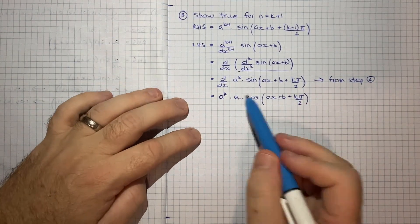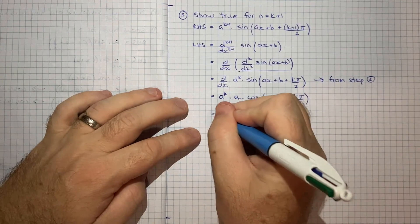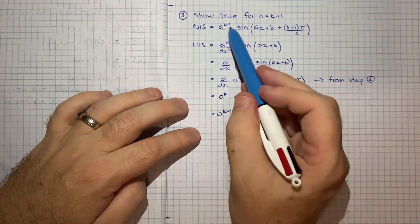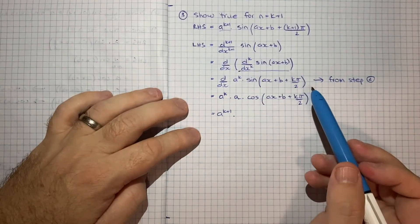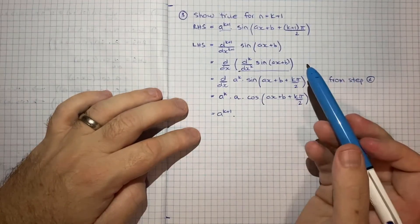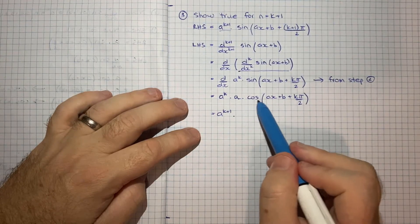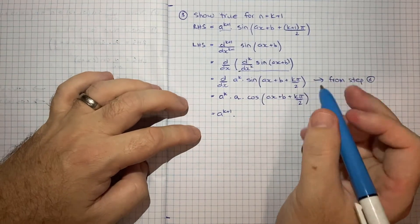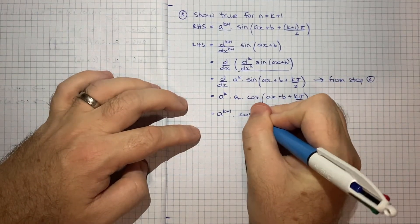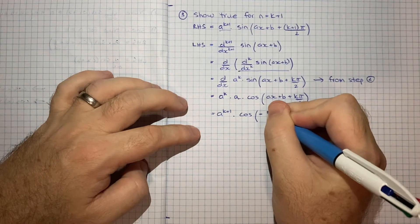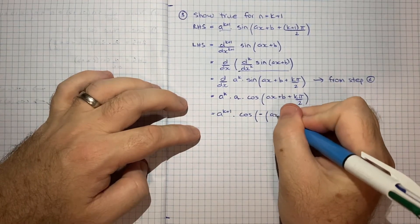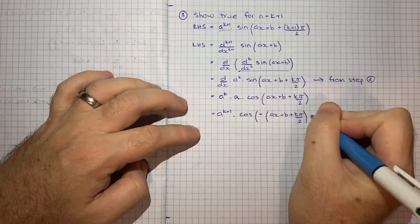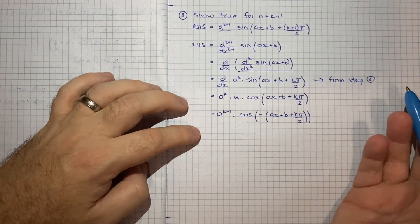And in terms of differentiating this we use the same technique we did before. The derivative of the inside with respect to x will just be a. So it's going to be times a and then we write cosine and then we leave what's inside. Now because we've got a^k times a that can become a^(k+1). Which is good because we do have an a^(k+1) in our right hand side. And just like we did for step 1 we need to convert this cosine into a sine. And I think we can use the same technique as before. So the first thing we'll do is we'll just put a negative in front of everything. ax+b+kπ/2. And that's again using the fact that cosine is an even function.